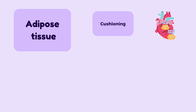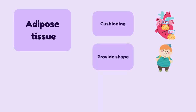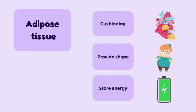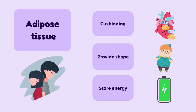Adipose tissue comprises fat cells that provide a cushioning effect, give shape, and also store energy. These cells play so many different roles, much like a movie filled with drama.